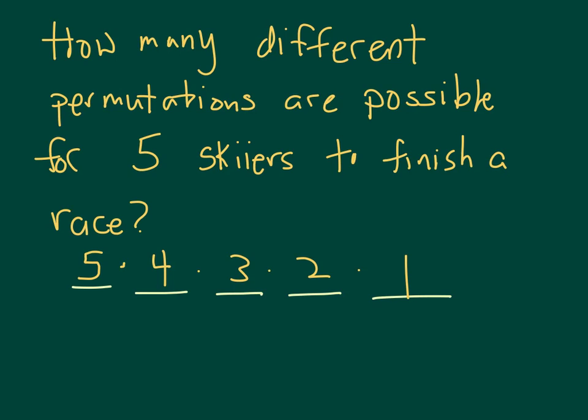There are five different people that could finish first, four that could finish second, three that could finish third, two fourth, and only one person that could finish in last place. The fundamental counting principle says we multiply these together and we get 120. 120 can also be written as five with an exclamation point. This is called a factorial. What it tells us to do is multiply this number by every integer less than it until you hit one. So five factorial is equal to 120.